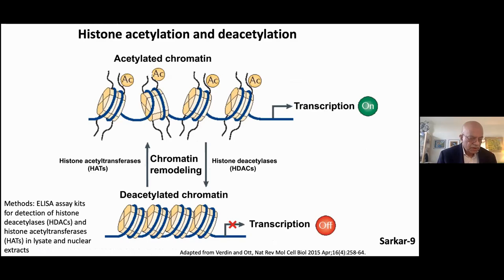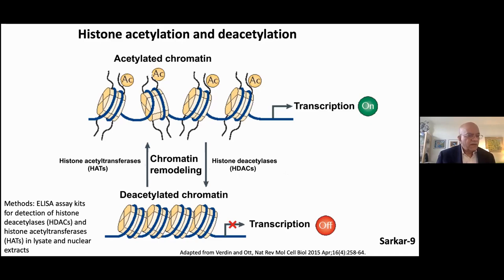Histone acetylation turns on genes while deacetylation turns off genes. These processes are carried out by two enzyme classes: histone acetyltransferases, or HATs, which cause acetylation, and histone deacetylases, or HDACs, which cause deacetylation. There are about 18 HDACs and about 30 known HATs. One can measure changes in HATs and HDACs using ELISA assays, and many ELISA kits are currently available to measure varieties of HDACs and HATs.